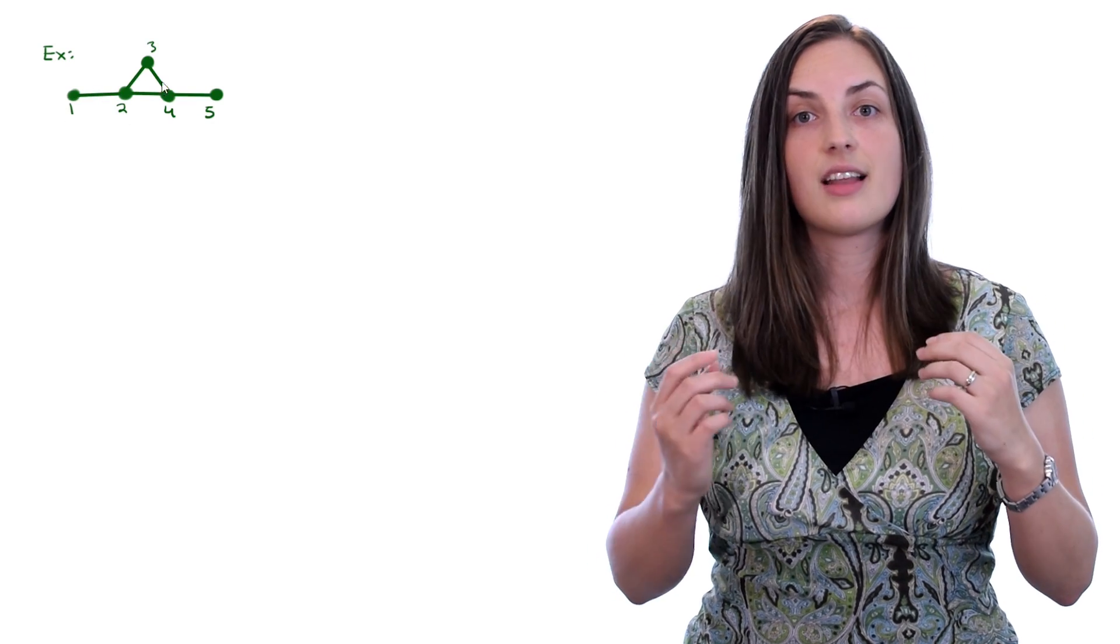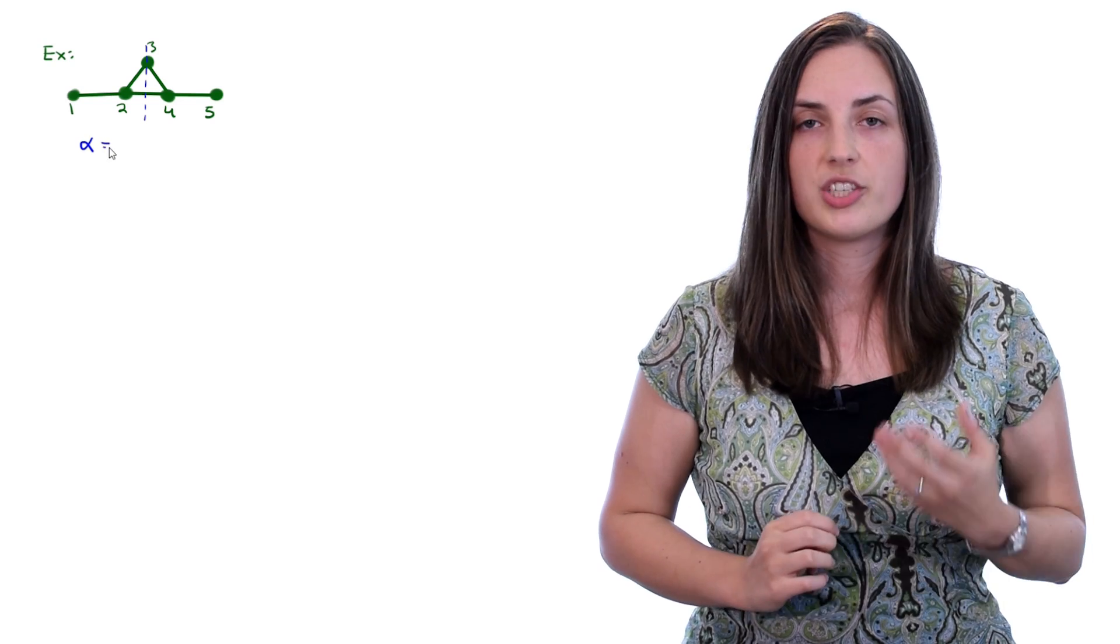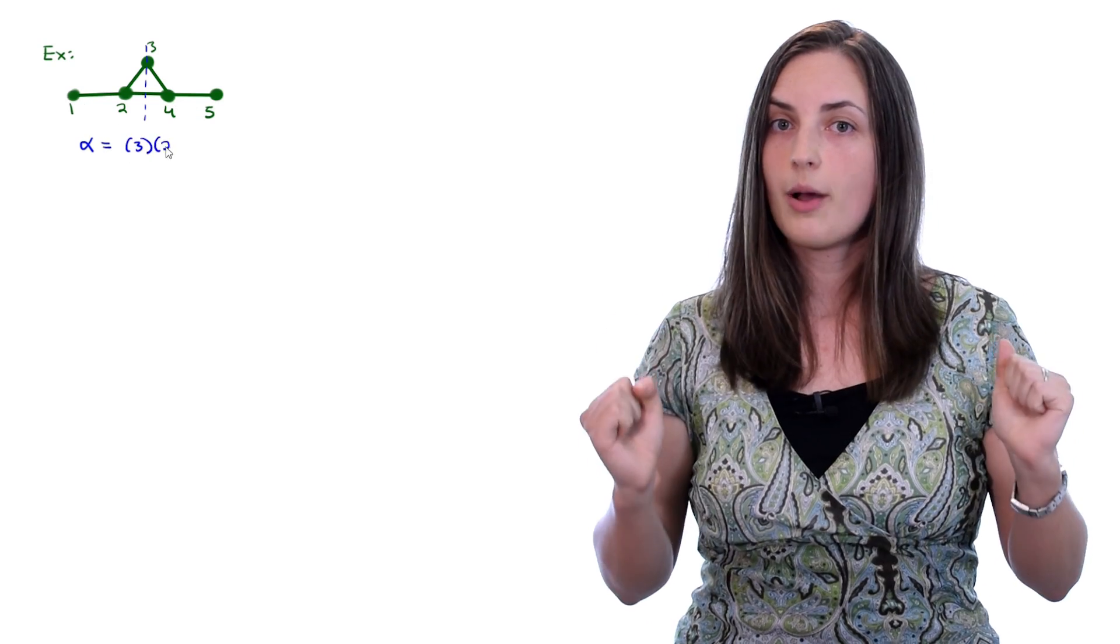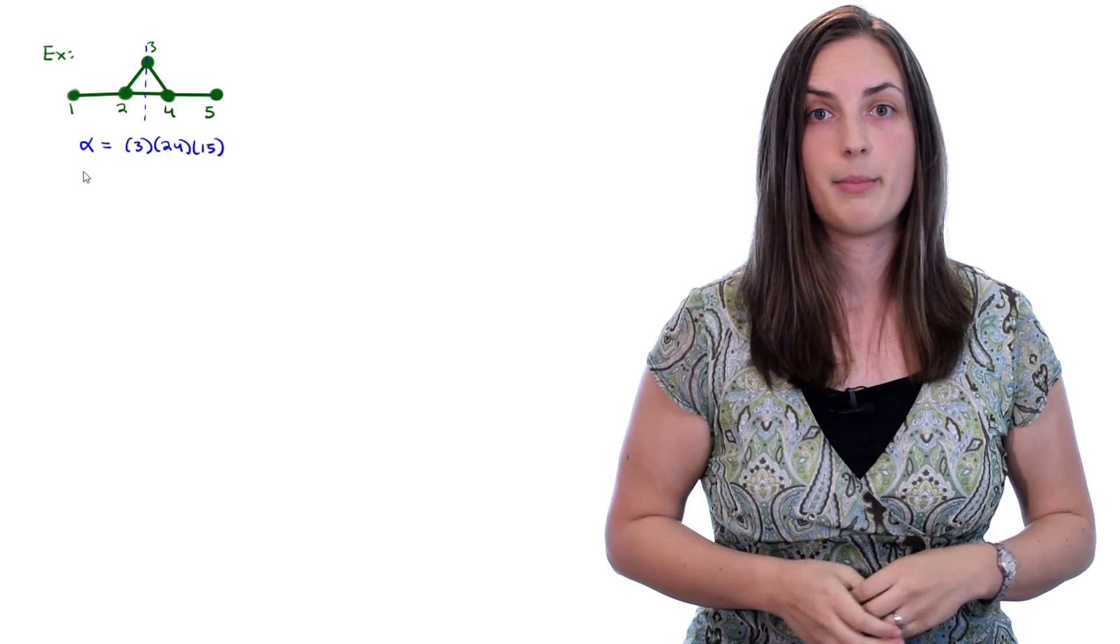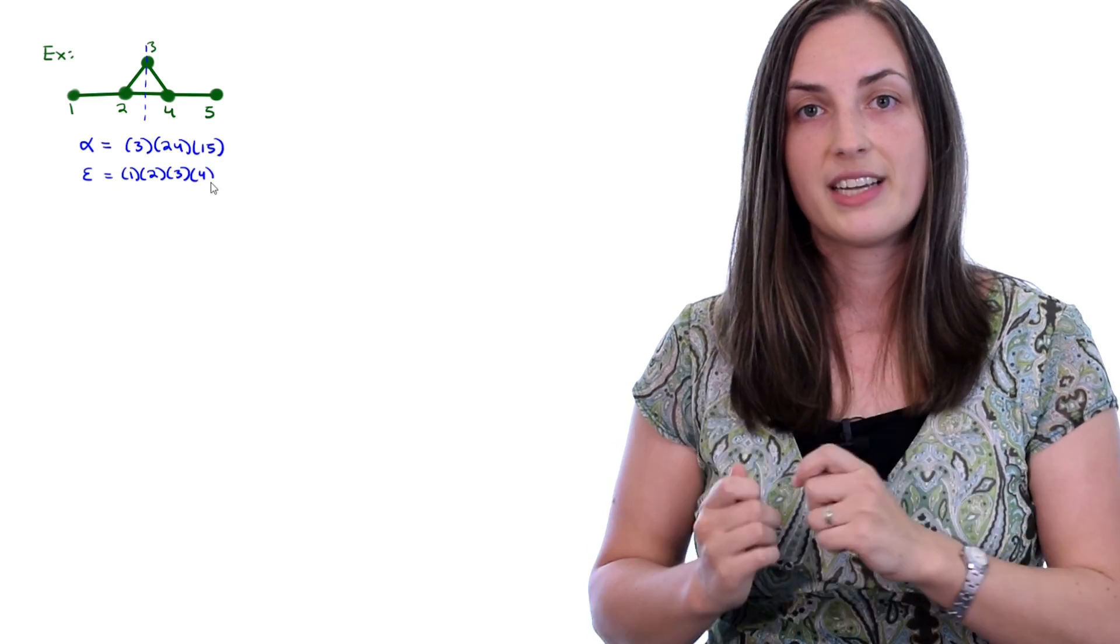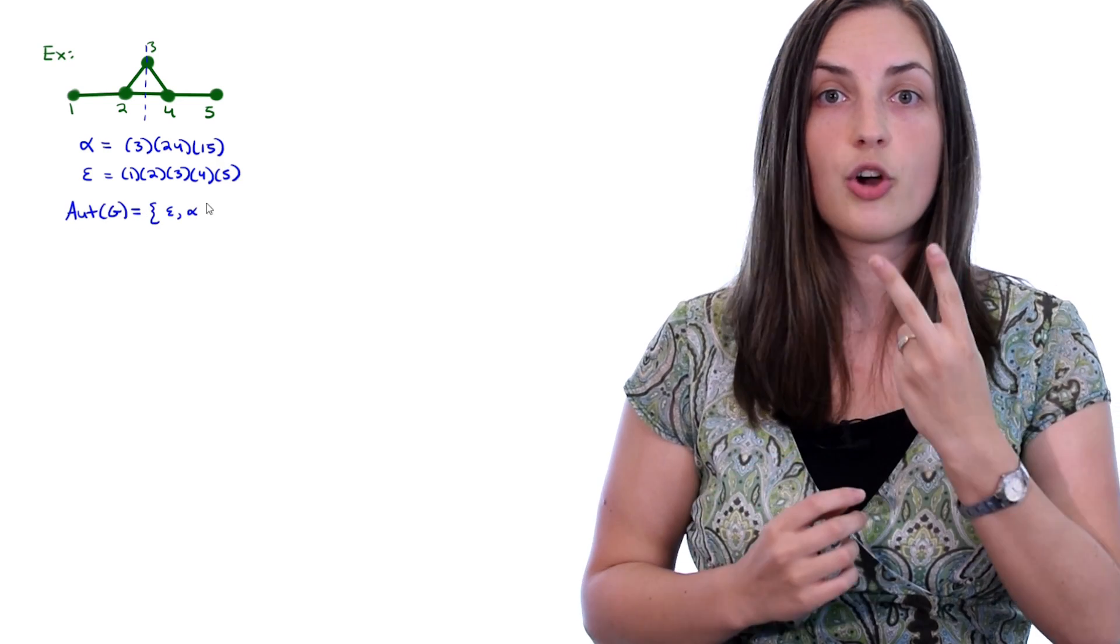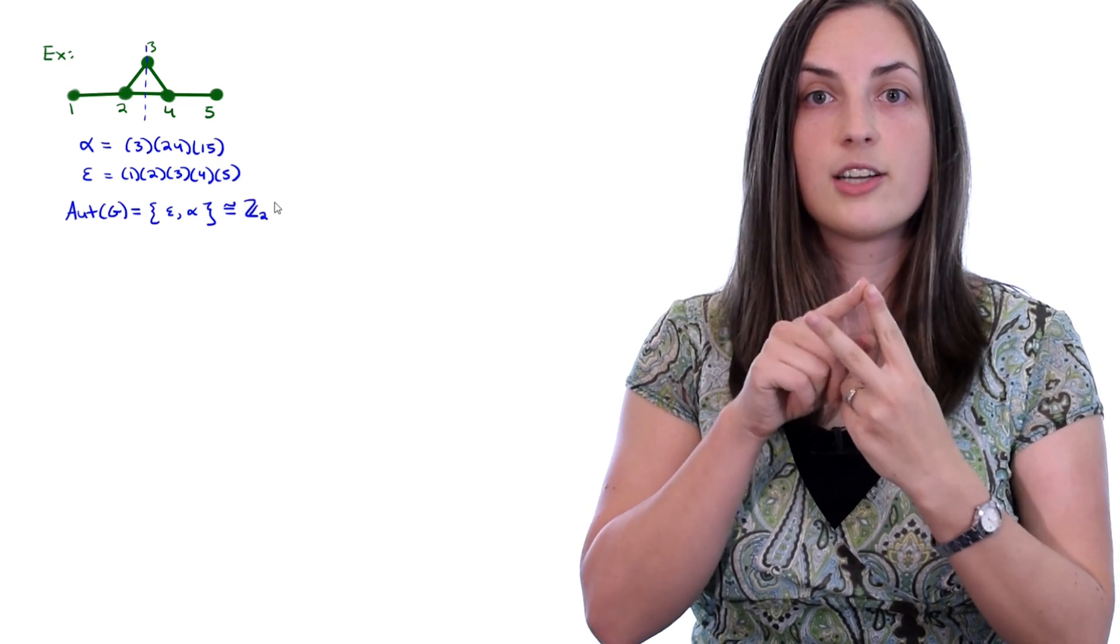Let's look at some more examples. This green graph on 5 vertices obviously has a line of symmetry, that blue dotted line. What does that line of symmetry tell us? Well, it maps 3 to itself, and it swaps 2 and 4, and it also swaps 1 and 5. So that's the mapping. Of course, we also have the identity automorphism, which just fixes each vertex. So the automorphism group of this graph is just those two elements, the identity and that single map that we found.